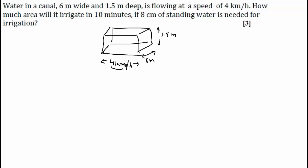So that means the distance of 4 km is covered by water every 1 hour. How much area will it irrigate in 10 minutes if 8 cm of standing water is needed for irrigation? That means water is coming out at this speed. 8 cm of standing water is required, and we need to find the base area.